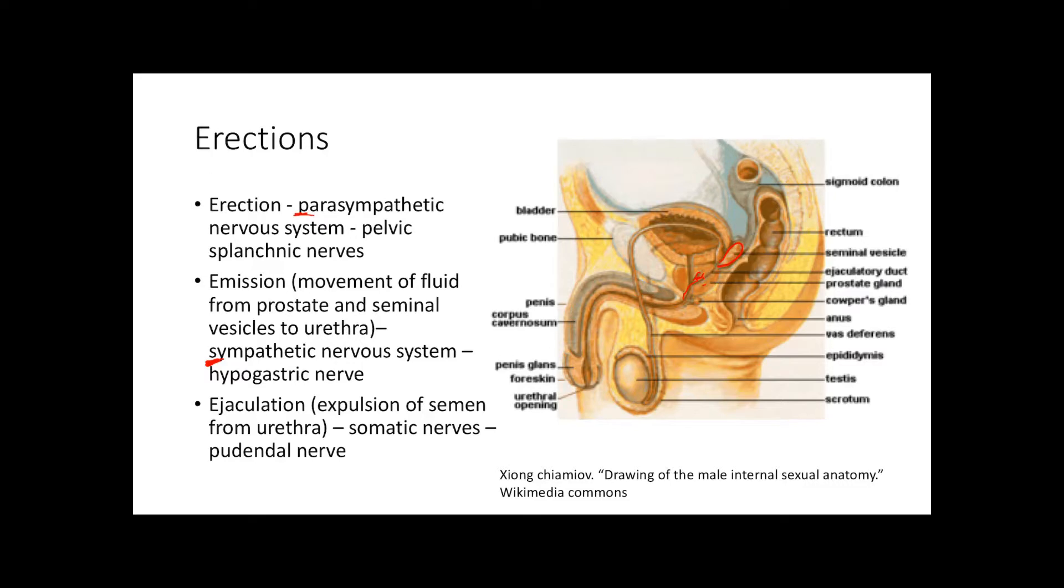To get the semen to shoot out, you need ejaculation. Smooth muscles in the penis and urethra contract, shooting out the semen. This is mediated by somatic nerves, specifically the pudendal nerve. The mnemonic is point, squeeze, shoot: point the penis up with an erection, squeeze fluid into the urethra, then shoot it out.